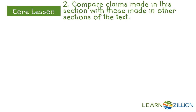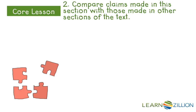Now we want to move on to Step 2, where we are going to compare the claim in this section to that of the entire text by asking what does this section add to the text as a whole. We really want to think about how this central idea relates to the rest of the article. The rest of the article focuses on the peregrine falcon and how, because of humans' actions, the falcon was almost extinct. However, because of humans taking action and working to protect the falcon, the peregrine falcon is now a flourishing species.